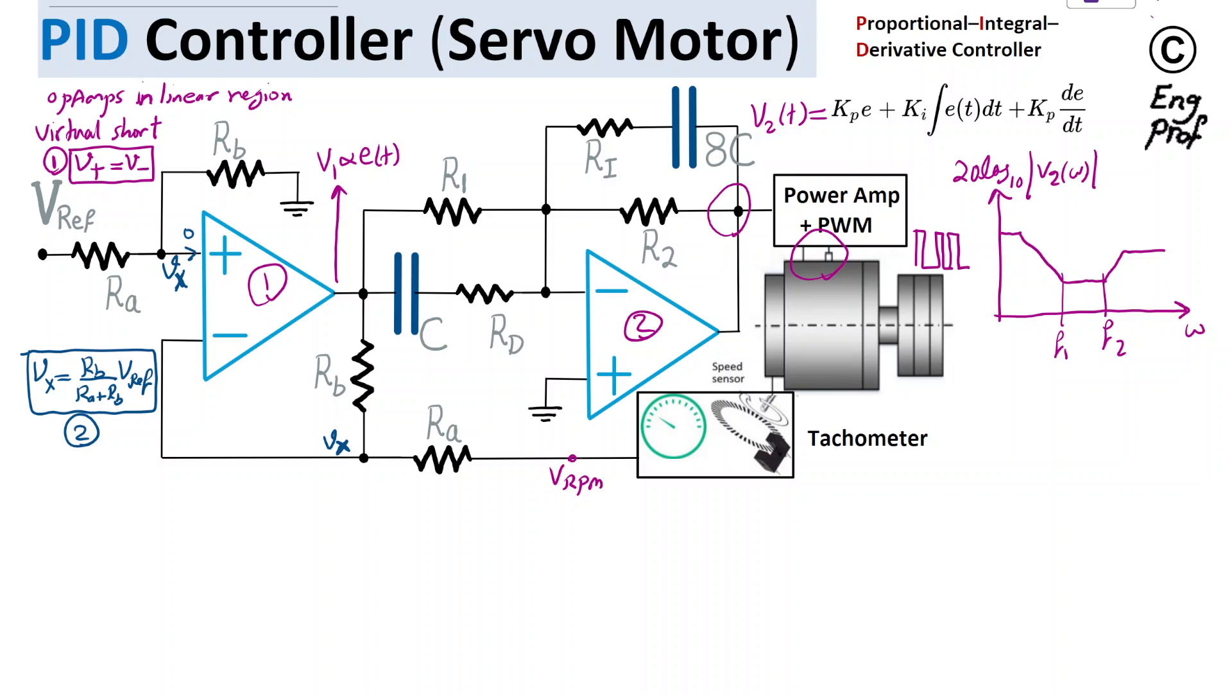There is a current going from VRPM toward Vx, and we can compute that current. It's just the voltage difference over Ra, which is VRPM minus Vx, divided by Ra. That current is the same current that goes this way because no current can go to the op-amp, since input impedance of ideal op-amp is infinite. We can compute the voltage drop across Rb, and hence we can get to V1. I'm doing KVL, using Kirchhoff voltage law and combination of KVL with KCL.